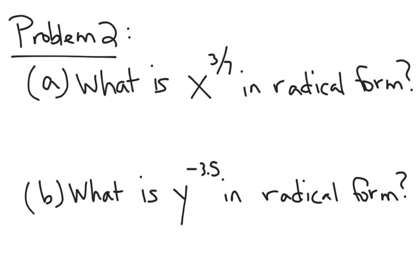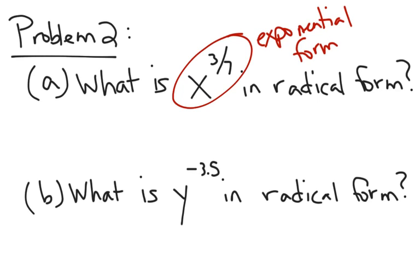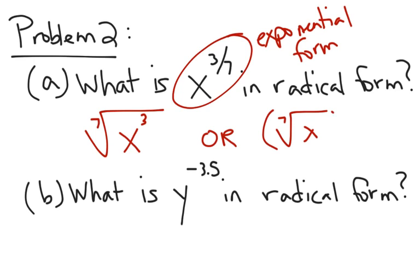Now, let's talk about converting between exponential and radical form. This is going to help us with solving of some equations. So, in problem A, what is x to the 3 7ths in radical form? This is called exponential form because it has an exponent. Radical form means we're going to rewrite it so it has a radical. The denominator of the rational exponent always tells me the root index. The numerator is always an exponent. So, you can either write it this way as the 7th root of x cubed or you can write it as the 7th root of x in parentheses cubed.